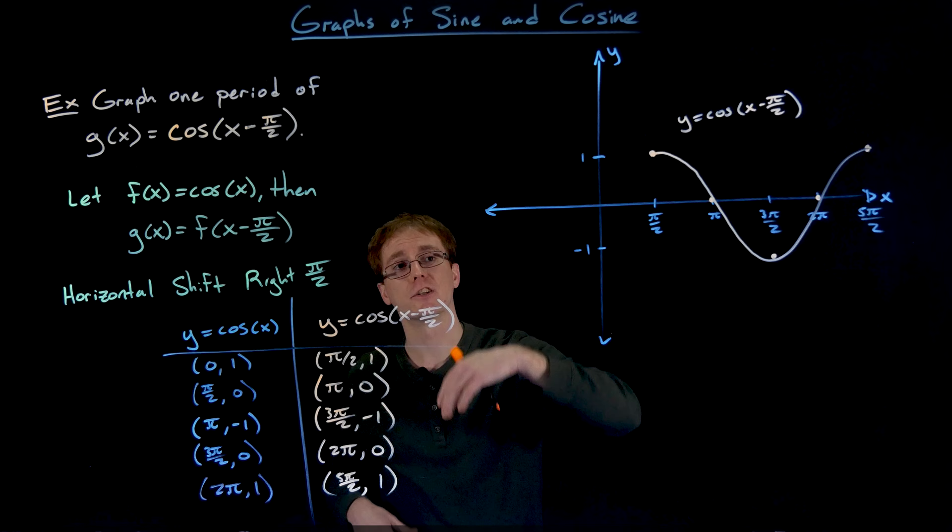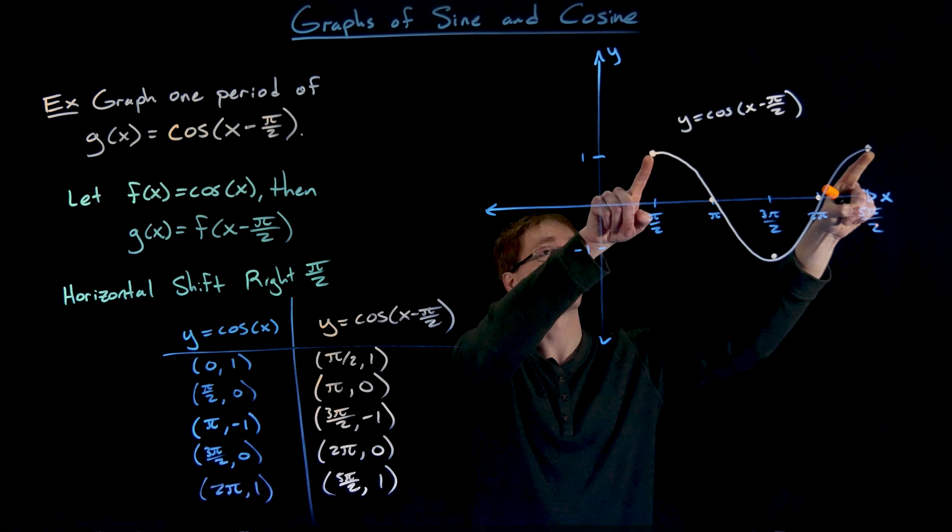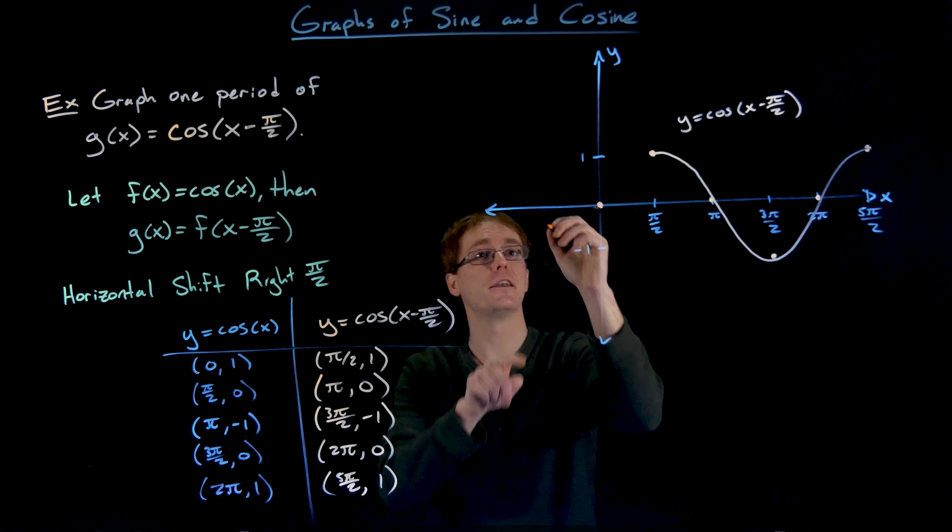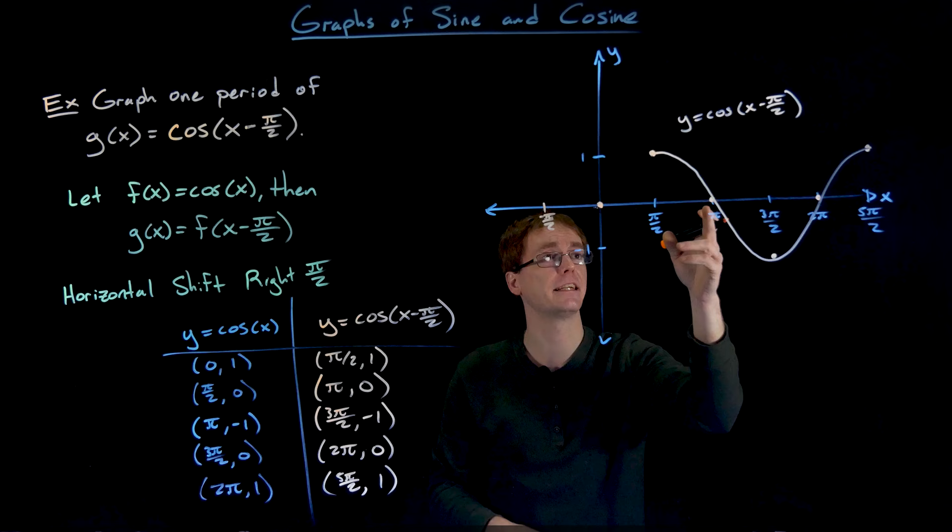These two points sort of correspond to each other. So if we're going to graph our next period to the left, we have to go to the next point to the left. So that point that is at (2π, 0) would end up at (0, 0). That point that was at (3π/2, -1) will now end up at (-π/2, -1) and so on.